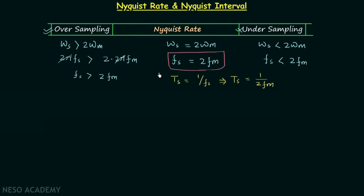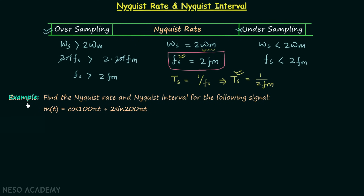In questions, when they ask you to calculate the Nyquist rate, this means you need to calculate Fs. When they ask you to calculate the Nyquist interval, this means you need to calculate Ts. Both parameters are calculated after finding the maximum frequency component of the message signal, which is ωm. To understand this better, let's solve one example problem.